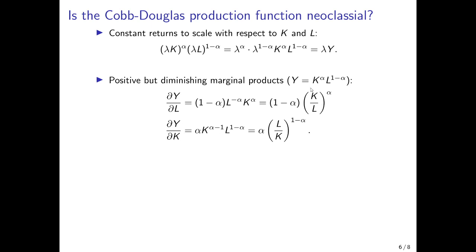With respect to capital, the derivative gives alpha times K to the power of alpha minus one times L to the power of one minus alpha, which we can rewrite as alpha times (L/K) to the power of one minus alpha. This is also diminishing in capital employment. And as K goes to infinity, the marginal product goes to zero; as K goes to zero, the marginal product goes to infinity.